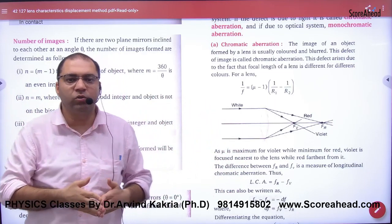So how do you count? How many images will be formulated? This is the first formula. The number of images is m-1, where m is 360 degree divided by theta. Theta is the angle between two mirrors.